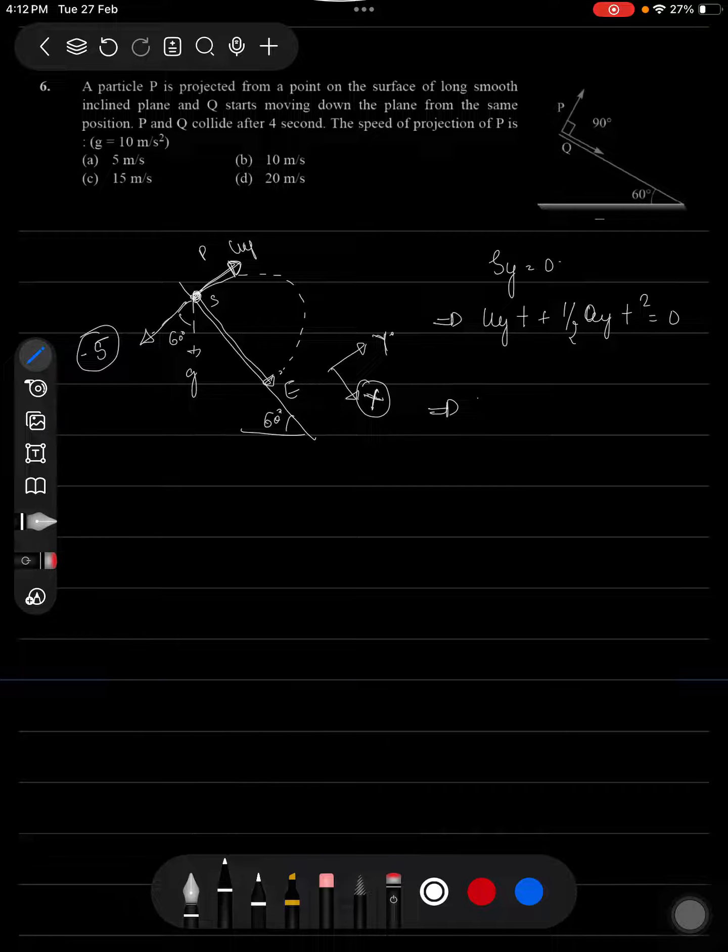Uy value is what we have to calculate here. Time is 4 seconds according to the problem. After 4 seconds this is coming and hitting here. So I am substituting t equals 4 plus half times acceleration minus 5 times 4 squared equals 16 equals 0.